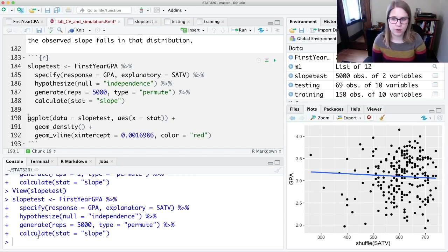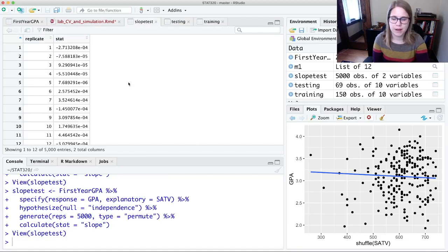If it's taking too long on your computer, you could reduce that number. But now I have 5,000 observations, where each row represents one time that I took the two variables, I mixed up the values of one, and I computed the slope. And then I put that in, and here was my slope statistic. And then I mixed it up again, found the slope, recorded it. I did that 5,000 times.